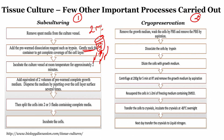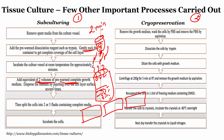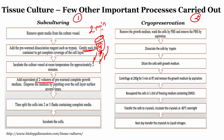After incubation at room temperature, add an equivalent of two volumes of pre-warmed complete growth medium. Then take the cells and split them into two to three flasks and incubate. Incubation is done in a CO2 incubator at 37 degrees centigrade, 5 percent CO2, and 95 percent relative humidity.